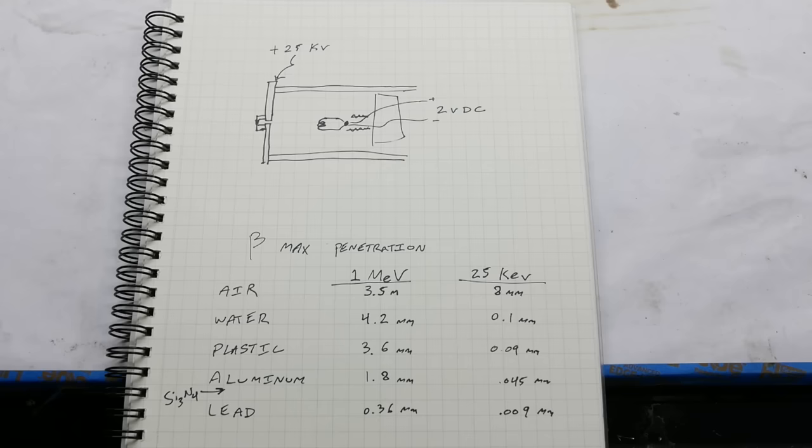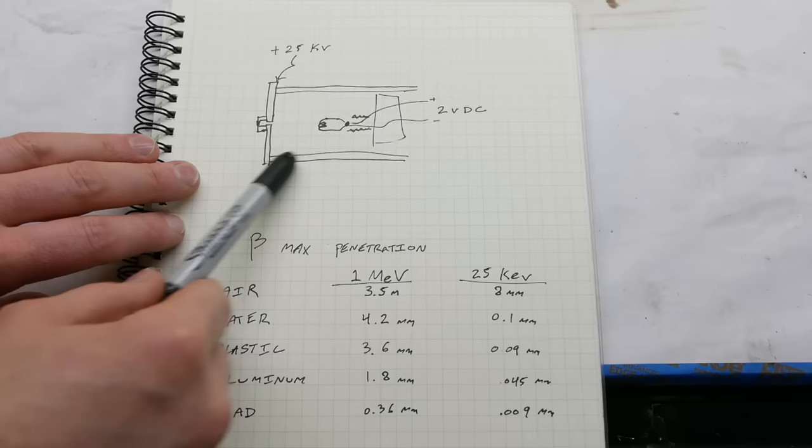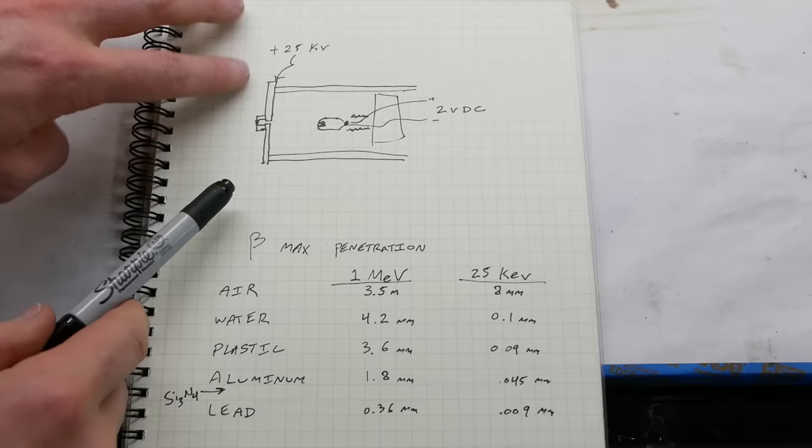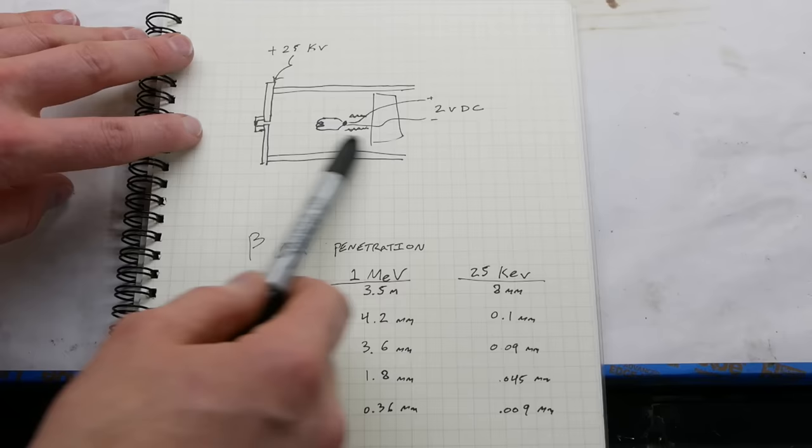Here's a schematic of how this thing is built. We've got our glass tube here, our aluminum plate here, and the filament from the crushed light bulb here. In today's setup, I'm going to put the plate at plus 25 kilovolts and the filament at zero. There's about two volts across the filament to heat it up. And then we've got our aperture here.